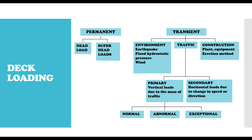Most of the time we have combinations in which you can combine HA loading — you can combine HA with HB — though it depends on the kind of bridge you are designing. Check the design standards I mentioned earlier to see how to combine each of these live loads with the permanent load. Then we have the secondary load, which are loads due to changes in speed or direction of the vehicle. This includes centrifugal, braking, skidding, and also collision load. Those are the two primary types of traffic load: primary load and secondary load.